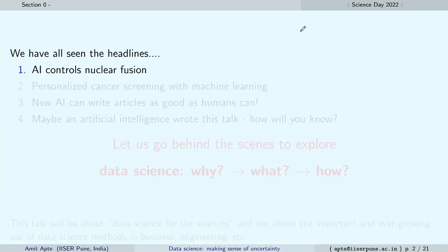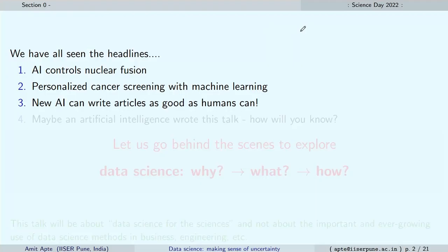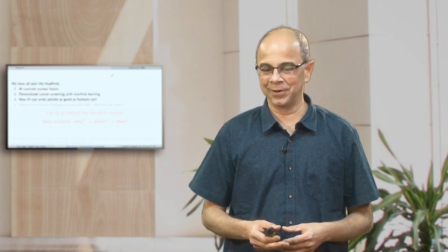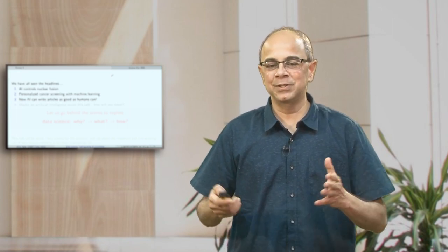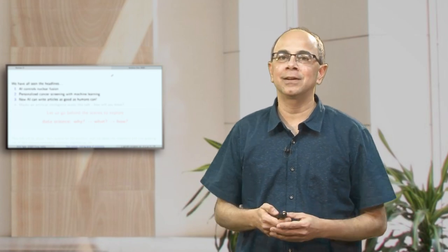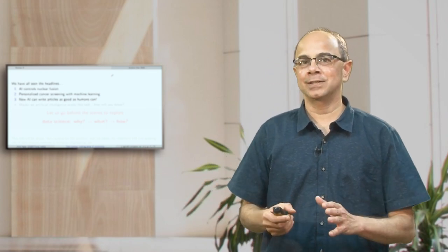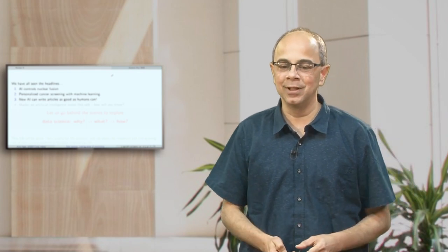Some of you may have seen headlines that are quite common nowadays. For example, artificial intelligence that controls nuclear fusion, or medicine — personalized cancer treatments using machine learning methods — or even articles written by computers that look almost as good as if a human had written them. All of these headlines implicitly talk about data science, and this is what we will try to discuss.